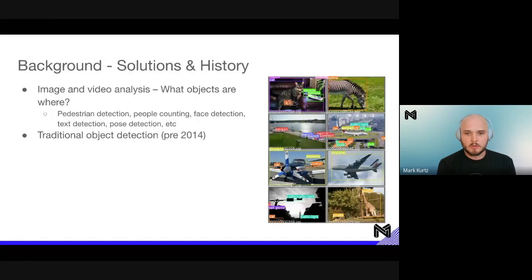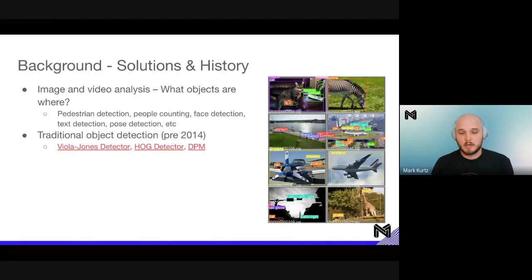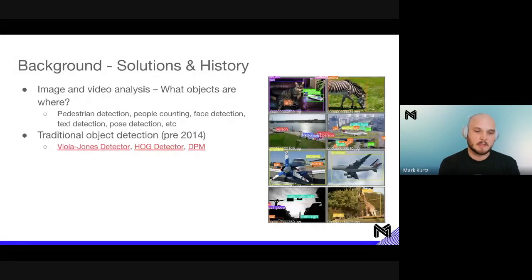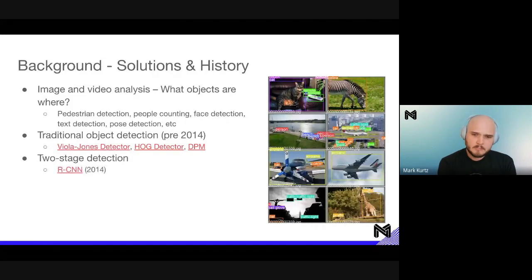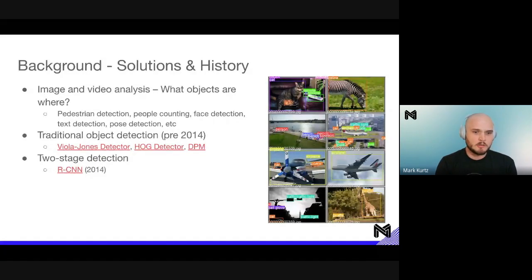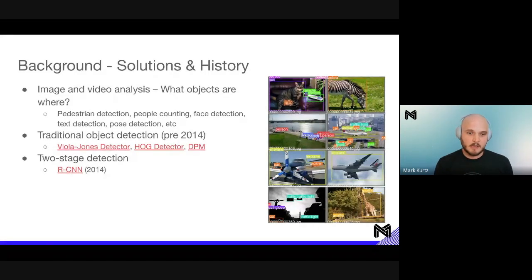Before 2014, we had a more traditional object detection approach — things like the Viola-Jones detector, HOG detector, and DPM. These were focused on feature engineering using SVMs. HOG does histogram of gradients to try and detect objects within images. After 2014, once deep learning started catching on, RCNN was introduced as a two-stage detector. The first stage finds general regions within an image that could contain objects, and the second stage puts bounding boxes around those and classifies them.